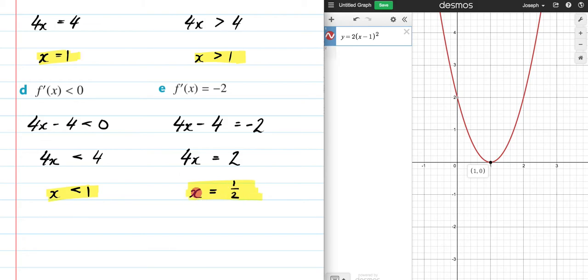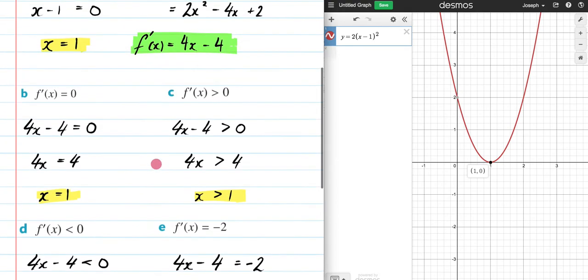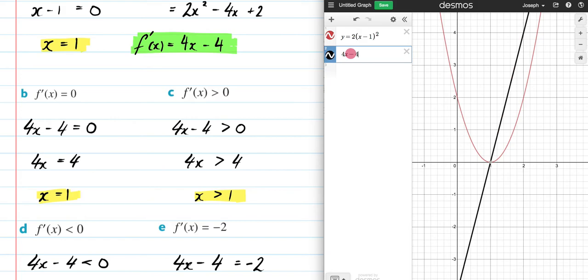Now, the question itself doesn't require it of us, but let's now just take some time and reflect on what we've done. So we've found all these values, which is great, but what do they mean? So to help us understand this, let's come over here and graph our derivative, which is 4x - 4. So there it is right there in black, 4x - 4. There's our derivative.